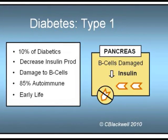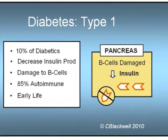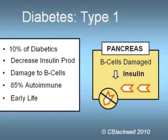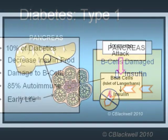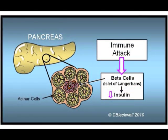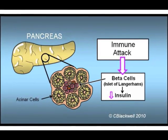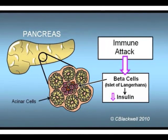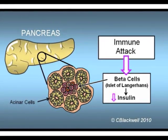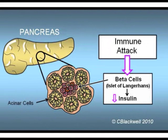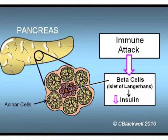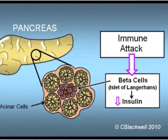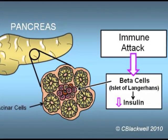Usually, diagnosis is made before age 20, so this used to be called juvenile diabetes. The reason insulin is lacking is because the cells that produce it are destroyed. 85% of the time, destruction occurs because your own immune system is triggered to attack the insulin-producing beta cells in the pancreas. The cells that produce insulin are lost, and the only way to treat this is by taking supplemental insulin. The discovery of insulin earned two doctors at the University of Toronto a Nobel Prize in 1923.